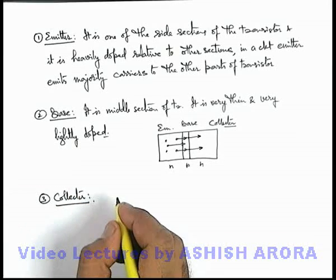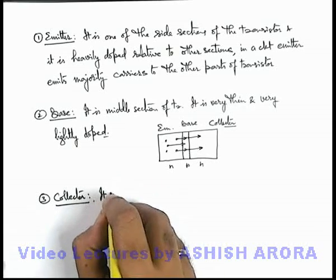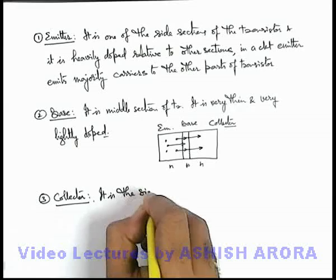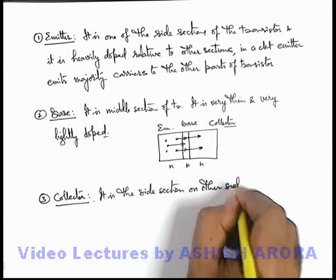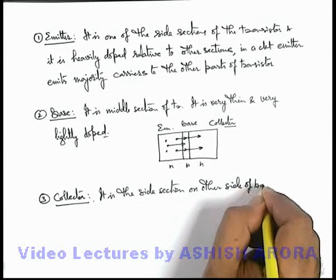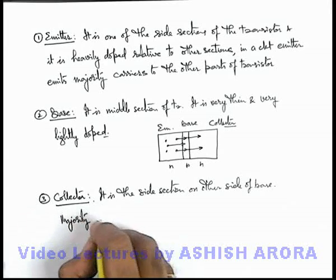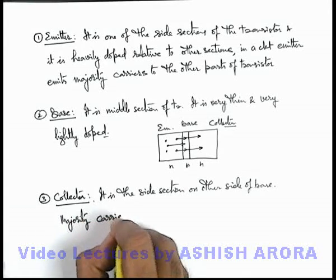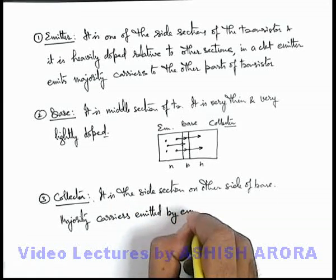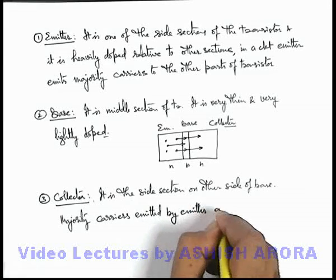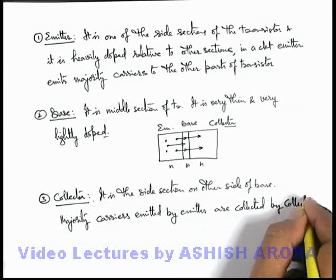So similarly we can write about collector which we have just now discussed. For collector we can say, in a collector, we can write it is the side section on other side of base, and majority carriers emitted by emitter are collected by collector.